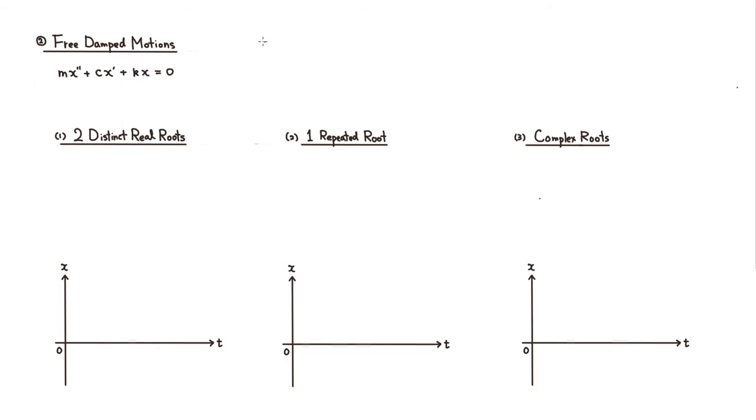So let's look at the characteristic equation as usual. It's going to be mr squared plus cr plus k is equal to zero. Then we're going to have to use a quadratic formula to find the r. So r is going to be negative b, actually in this case c, plus or minus square root of c squared minus 4mk all over 2 times m. So that's that.